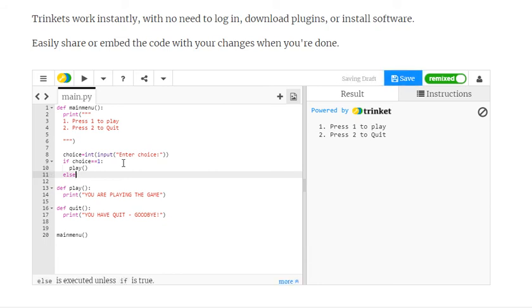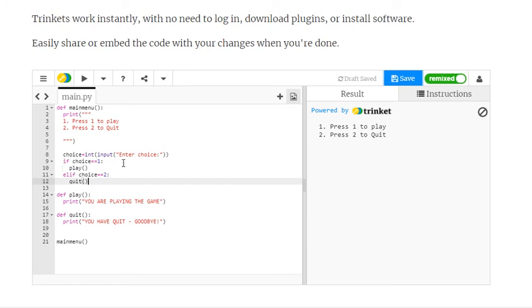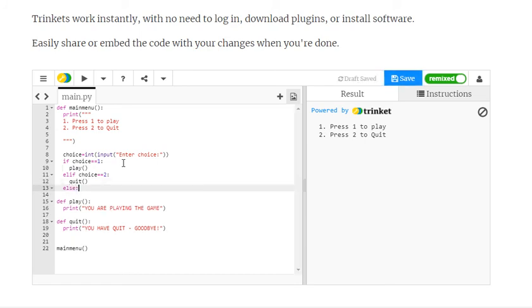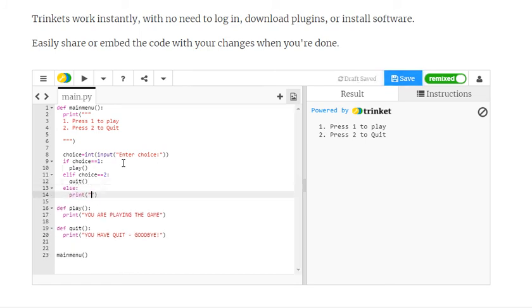Else, or you could even say elif, choice is equal to 2, jump to the quit function. If they put in something else, write, make the correct choice. Let's see if this works. If I put in 3, it says make the correct choice, however if I put in 1, it jumps to the play function, and similarly if I press 2, enter 2 on the keyboard, it says you have quit. This is a simple use of if and elif.